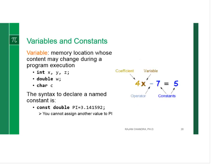We go to variables and constants. A variable: x, y, z are integer variables. Double w means w is a floating point variable. C is a character variable. The syntax to declare a constant or named constant is shown here: constant double pi equal to 3.141592. If you omit the word double, then the constant is assumed to be an integer constant.